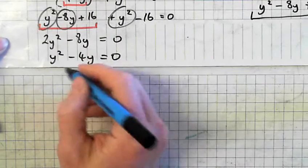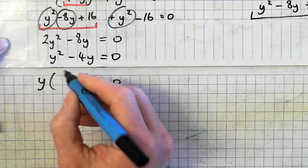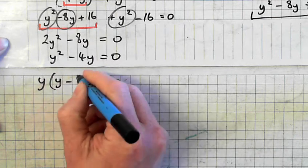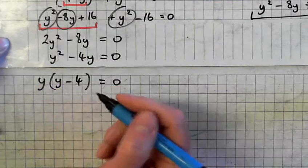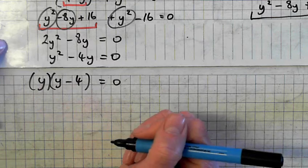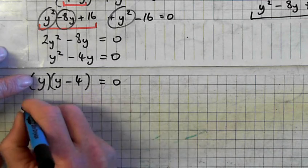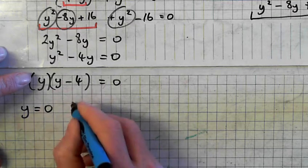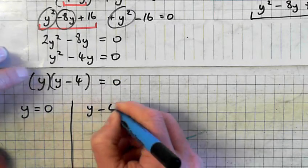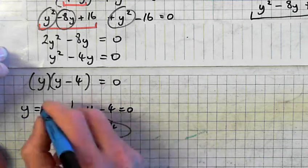So what can I take out of both sides? Y. So y times what is y squared? Y times y. That's a 4. So it can be written like that or like that. So first of all, y is equal to 0, that's the first answer. And the second answer, y minus 4 is equal to 0, y is equal to 4. Two y values.